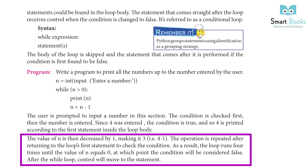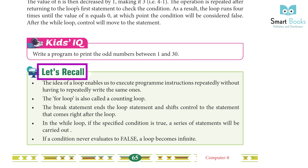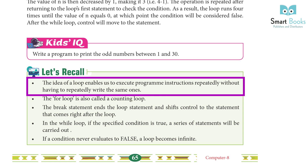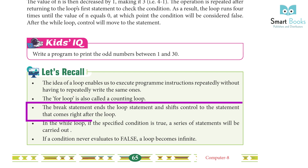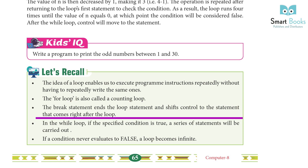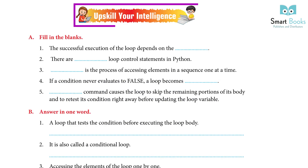Exercise: write a program to print the odd numbers between 1 and 30. Let's recall — the idea of a loop enables us to execute program instructions repeatedly without having to repeatedly write the same ones. The for loop is also called a counting loop. The break statement ends the loop and shifts control to the next statement. In the while loop, if the specified condition is true, a series of statements will be carried out. If a condition never evaluates to false, a loop becomes infinite.